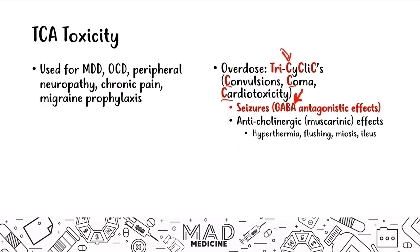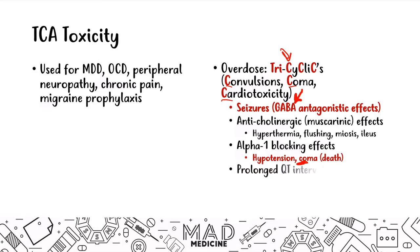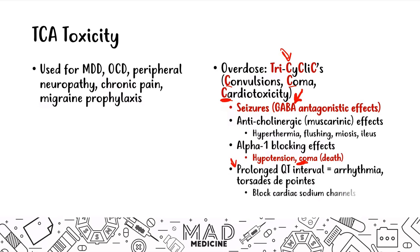Patients will also present with alpha-1 blockade effects like hypotension, orthostatic hypotension, coma, and even death in certain cases — that's the second C, coma. Then patients will present with prolonged QT interval, leading to arrhythmia and torsades de pointes — that's the cardiotoxicity portion. This is all due to blockade of the cardiac sodium channels; TCAs block the cardiac sodium channels and act similar to a type 1 antiarrhythmic. You can also have respiratory depression with TCA toxicity.